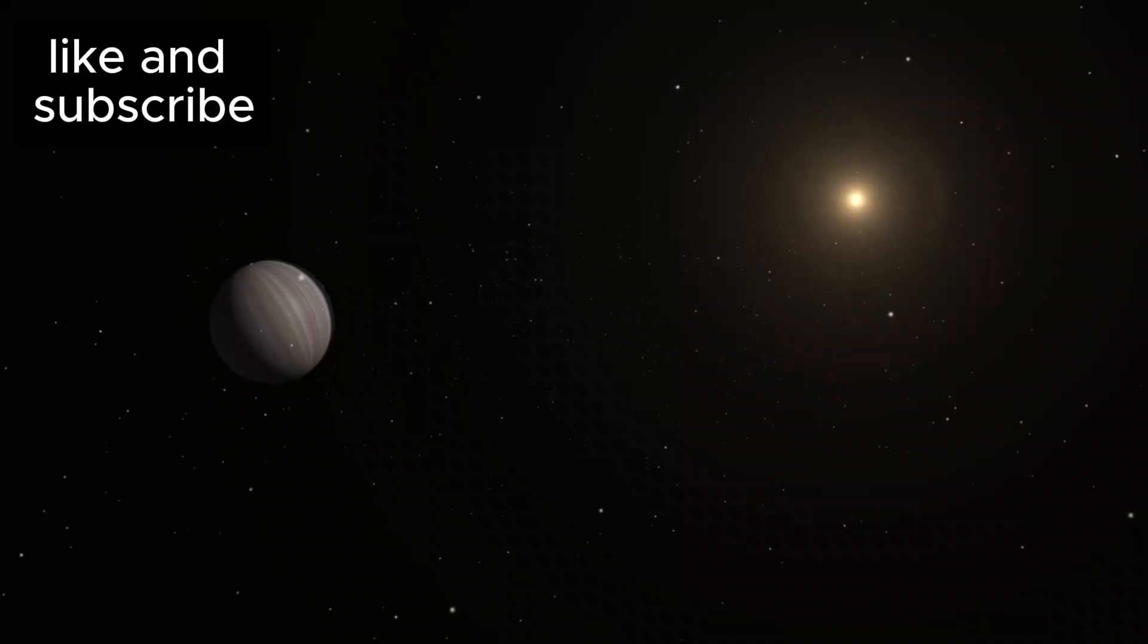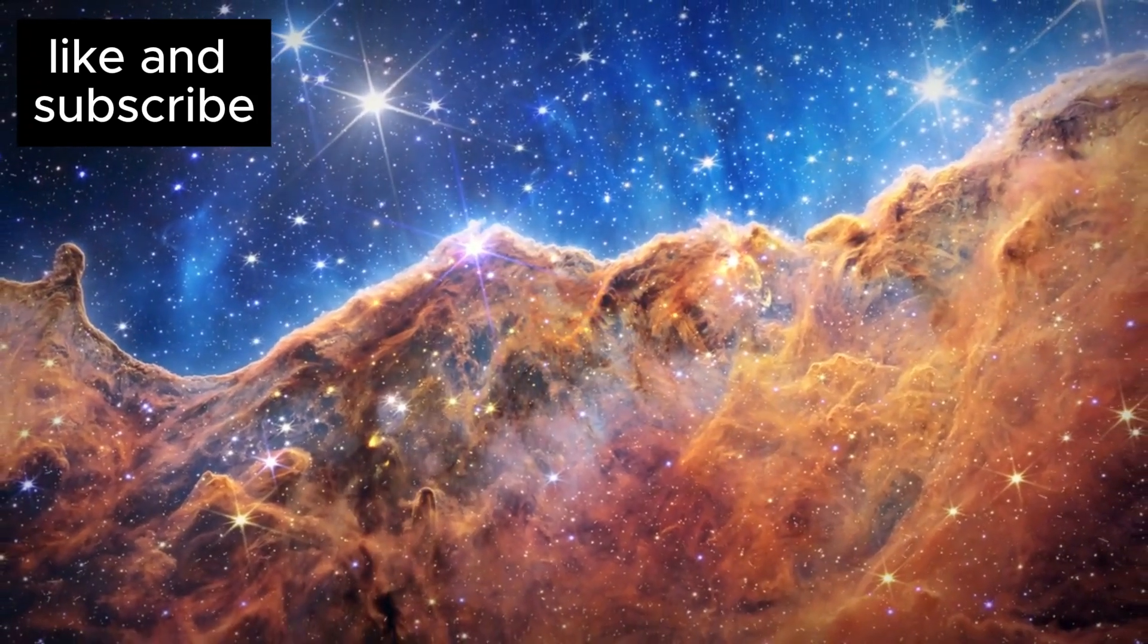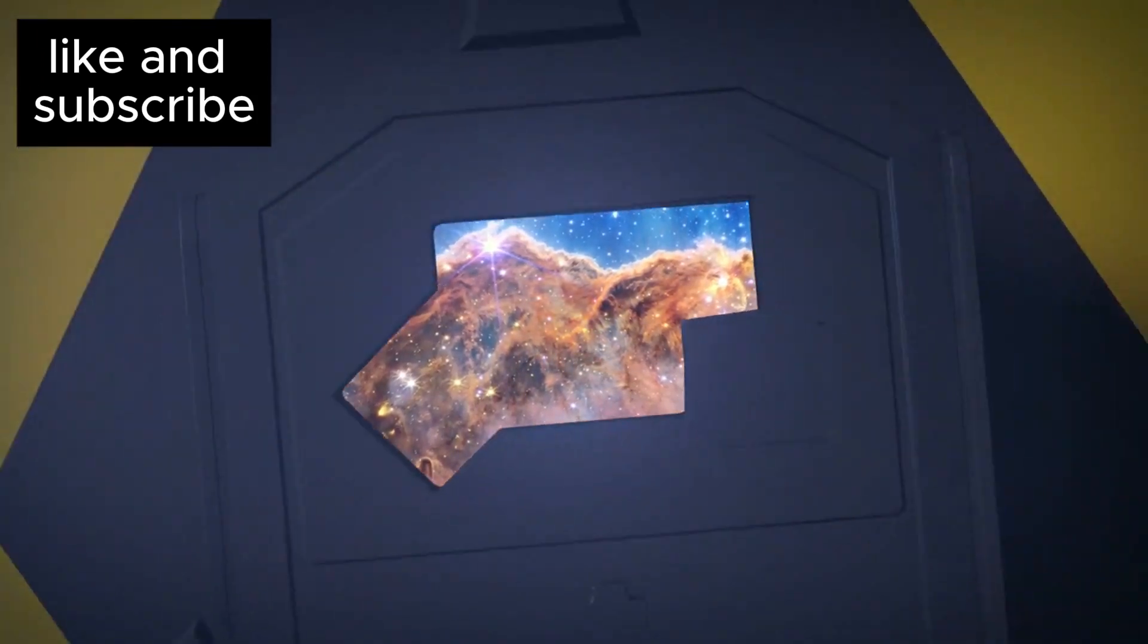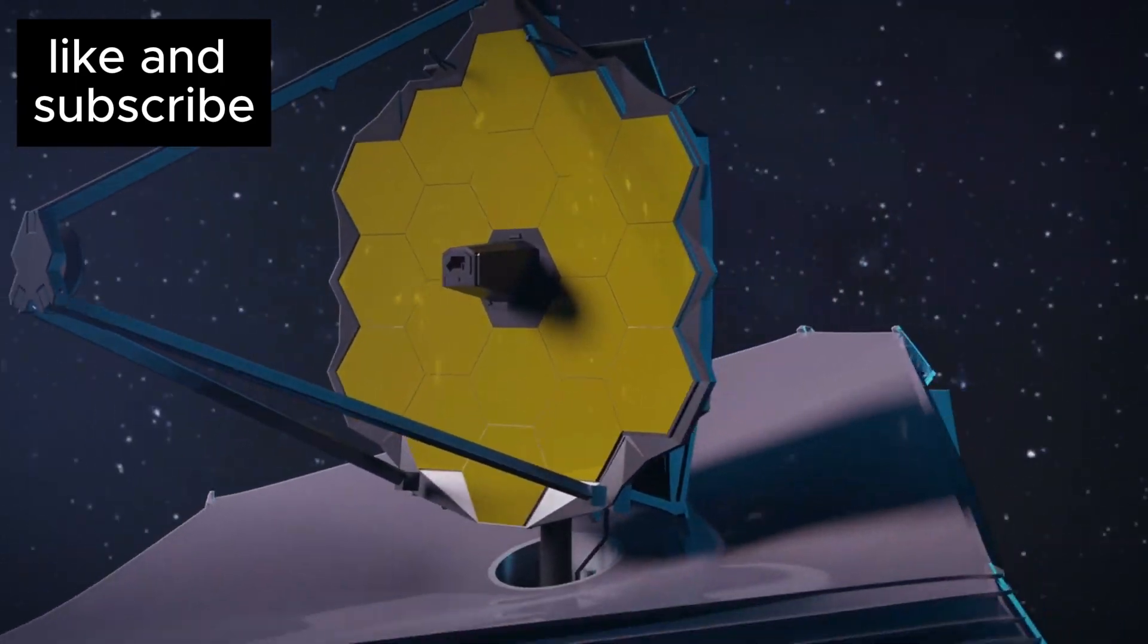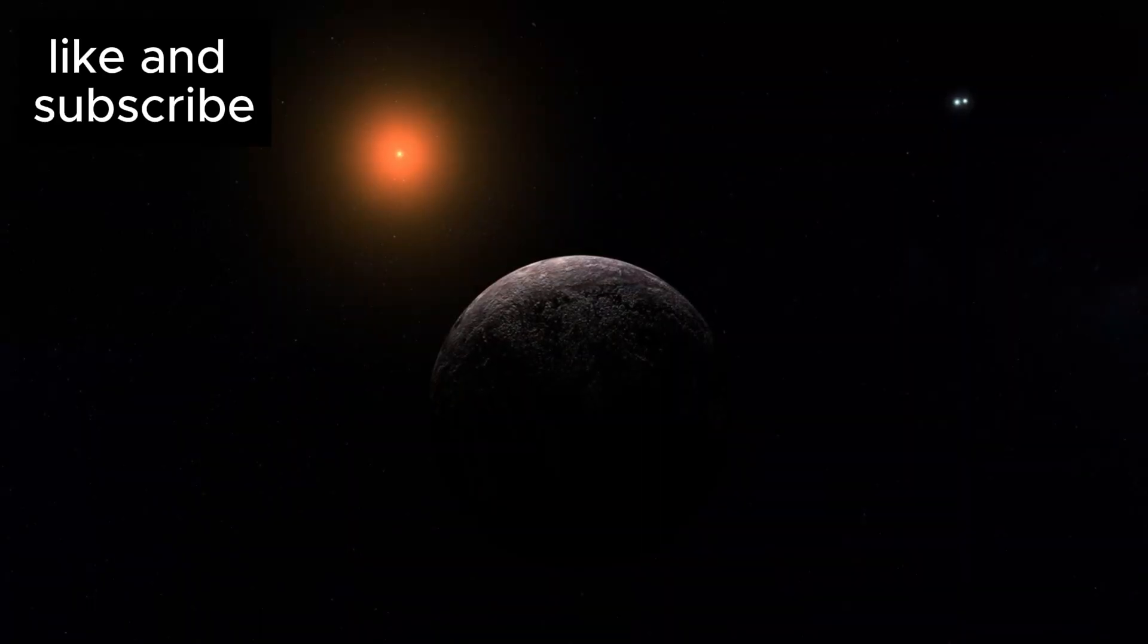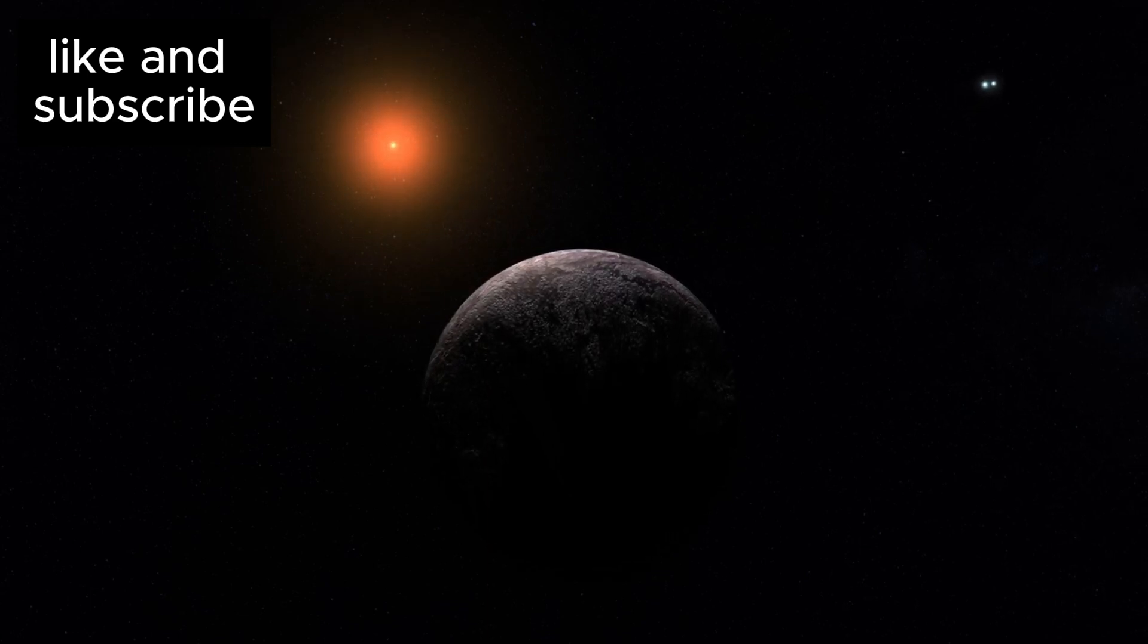One of the most thrilling revelations from the JWST is its high-definition image of Proxima B, one of the closest exoplanets to Earth. Situated just 25 light-years away, Proxima B is in the Alpha Centauri system, the closest star system to our own.